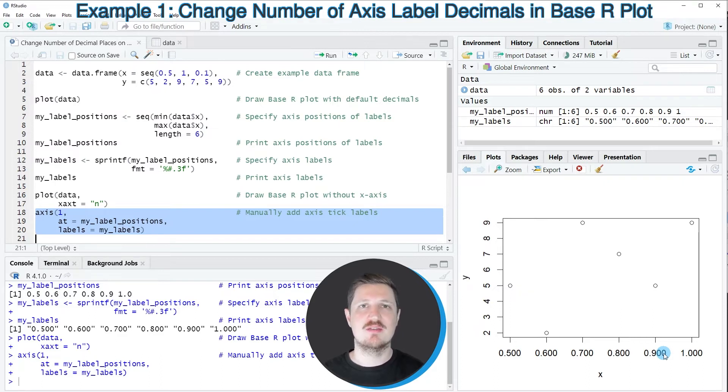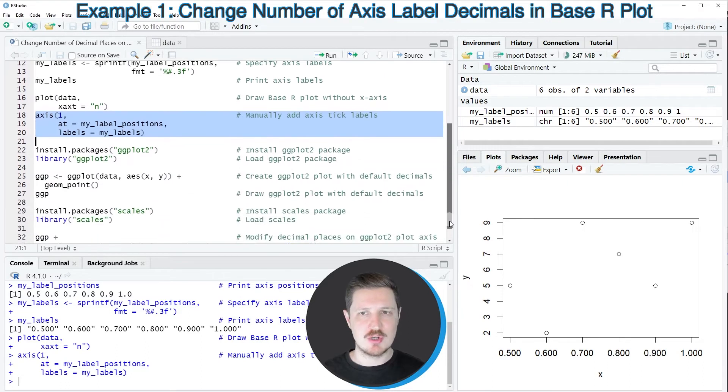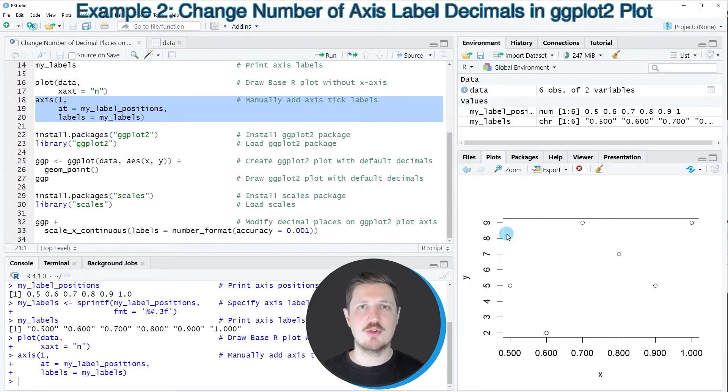So in this first example, I have explained how to change the number of decimal places using the basic installation of the R programming language. However, it's also possible to use the ggplot2 package for this task. And this is what I want to show you in the second example of this tutorial starting in line 22 of the code.